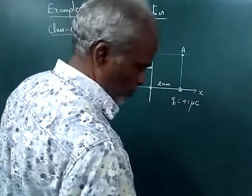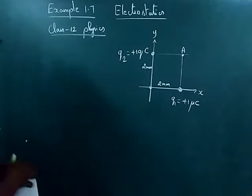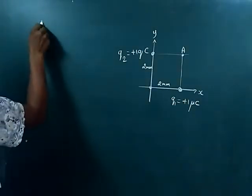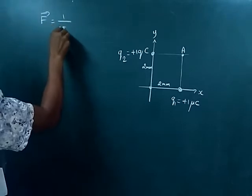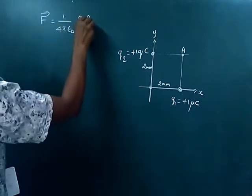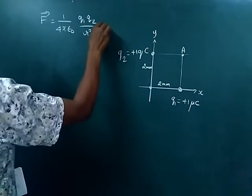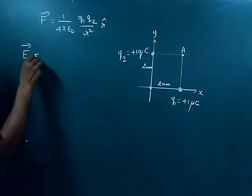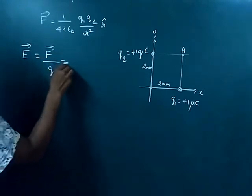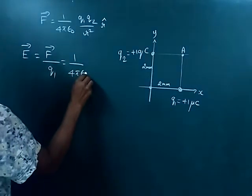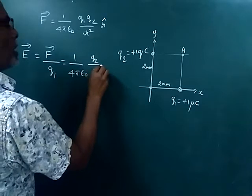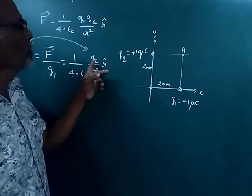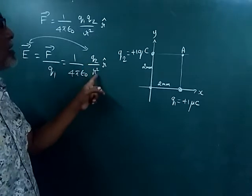The electric field formula is E = (1 / 4πε₀) × (q / r²) in the direction of r̂. We can write this as E = (1 / 4πε₀) × (q / r²) r̂. Now, when we release the electric field from the charge, it is q divided by distance squared, r̂.